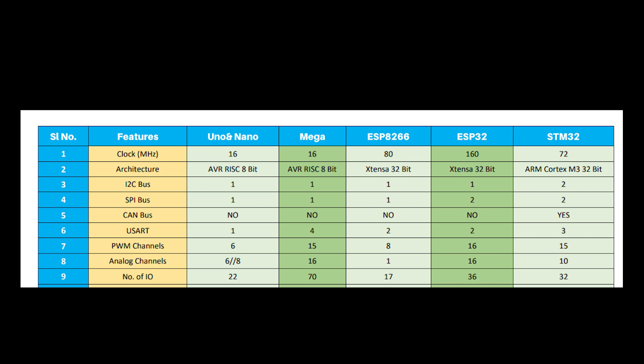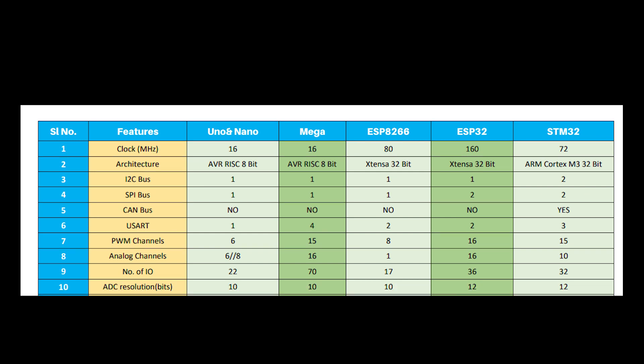Next we will compare the microcontroller boards by their number of input/outputs or IOs. Uno and Nano have 22 IOs, Mega has 70, ESP8266 has 17, ESP32 has 36, and STM32 has 32 input/output pins.